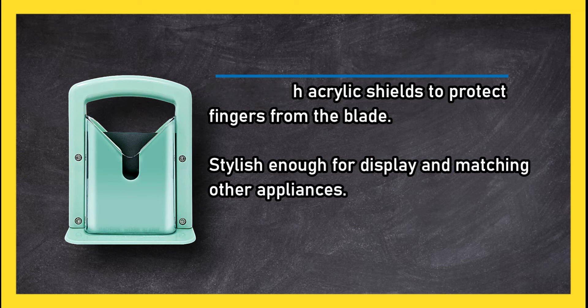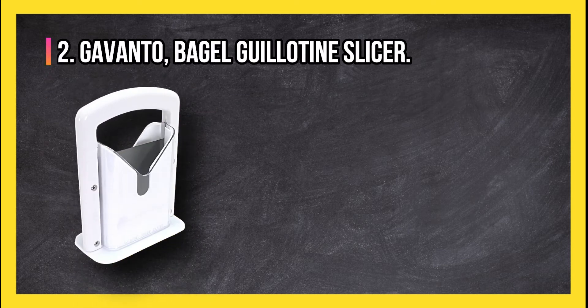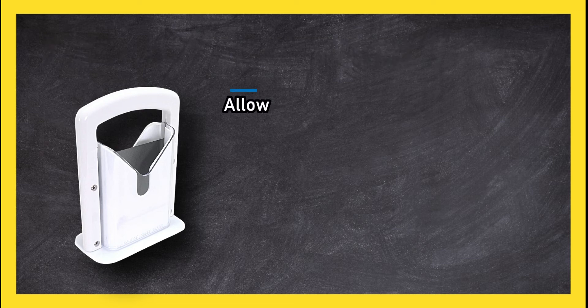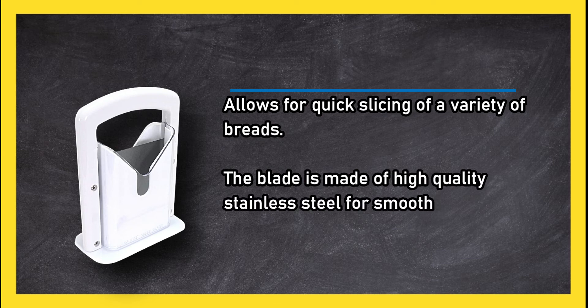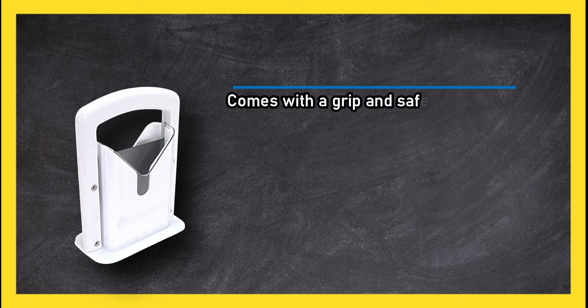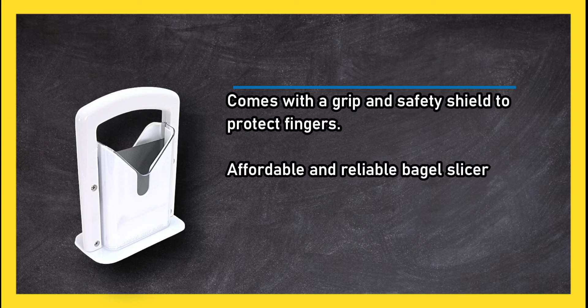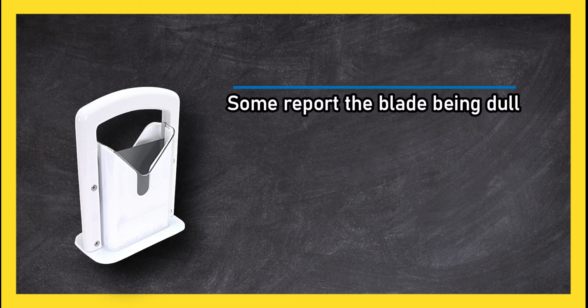At number two, Davanto Bagel Guillotine Slicer allows for quick slicing of a variety of breads. The blade is made of high quality stainless steel for smooth slicing, comes with a grip and safety shield to protect fingers. Affordable and reliable bagel slicer with added features. Some report the blade being dull.